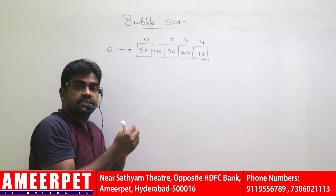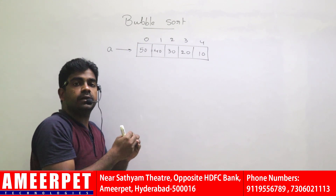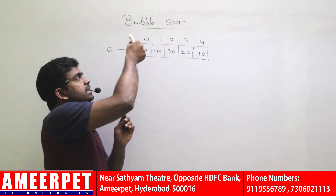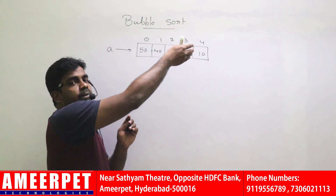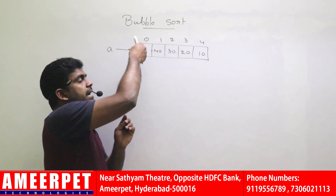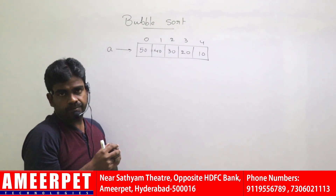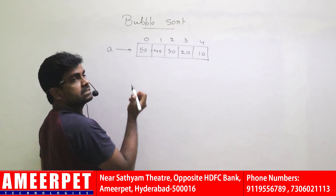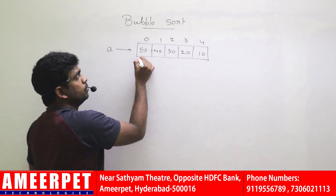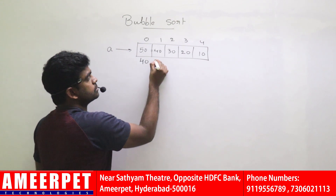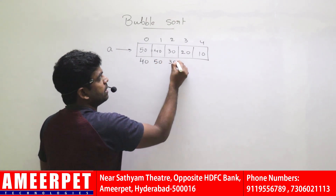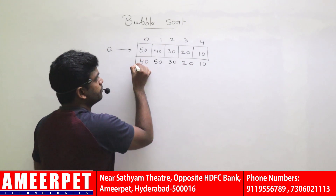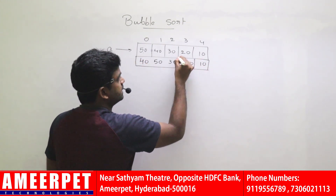So in this case, the index element is greater than the next element, so swapping them: values 40 and 50 are swapped, remaining the same — 30, 20, 10. Index starts with 0, next index starts with 1.